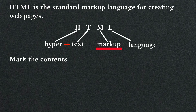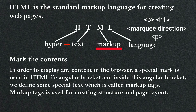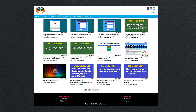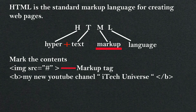'Markup' means marking the contents. In order to display any content in the browser, a special mark is used in HTML — that is, the angular bracket. Inside the angular bracket, we define some special text, which is called markup text. Markup text is used for creating structure and page layout. For example, to display an image, you write 'img src="#"' inside angular brackets. To bold text, you write '<b>my new youtube channel itech universe</b>'. There are a lot of predefined markup tags in HTML, like body, h1 to h6, table, tr, td, and many others. 'Language' means communication — it communicates to the browser on the World Wide Web. Language is an interpreter between users and the browser, telling the browser what the user wants to display.